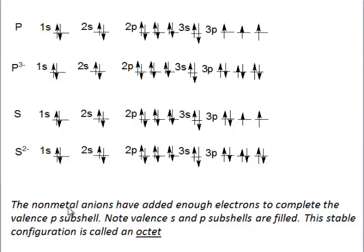In both cases, the nonmetal anions have added enough electrons to complete the valence p subshell. Note valence s and p subshells are filled. This stable arrangement or configuration is called an octet, and that's why these ions are the naturally occurring ones.